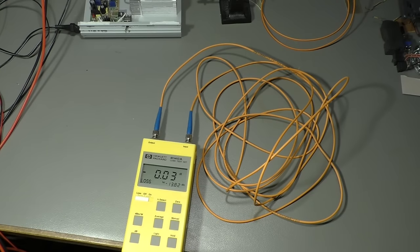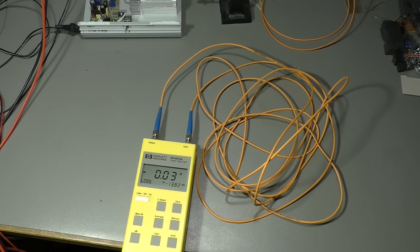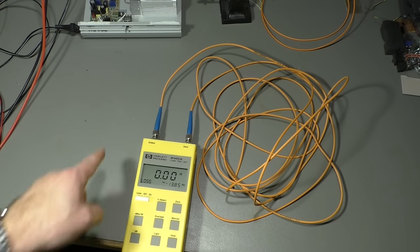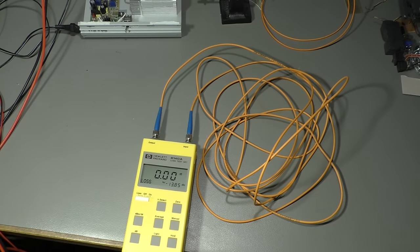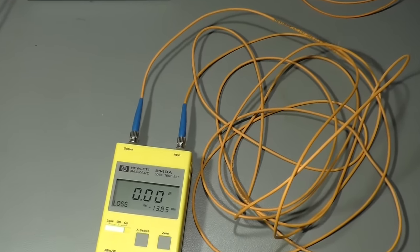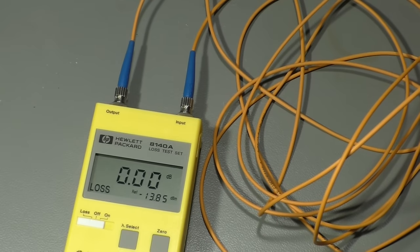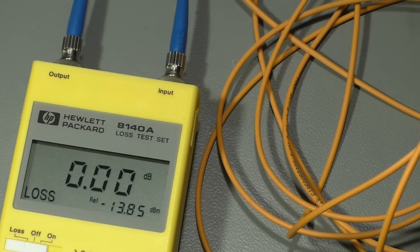Well I have here a HP loss meter that is made to measure power loss in fiber optic connections and cables. It is now set to zero. Zero decibels. We have an output, we have an input and the meter measures what comes from the output back to the input. And we are now at zero decibels.